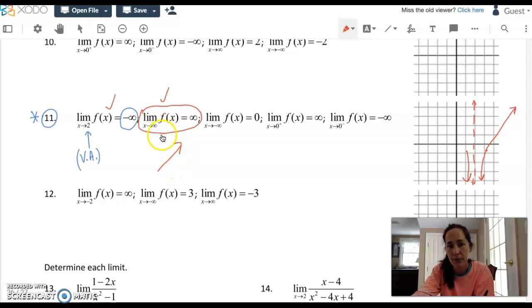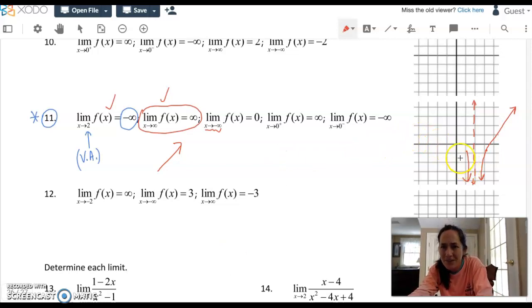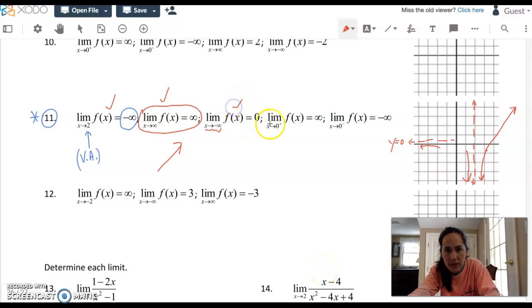What's the far left behavior of the graph? As x approaches negative infinity, we have to draw this so that the function approaches zero, either from above or below. Because I see this portion that's below, maybe I'll draw it from below here and I'll have a little partial HA that's at y equals zero. This graph is approaching like this.